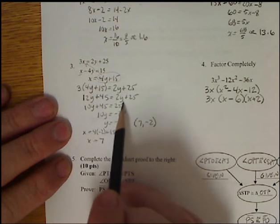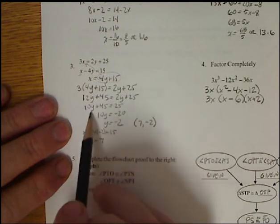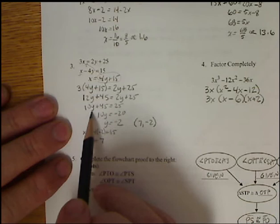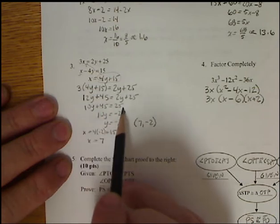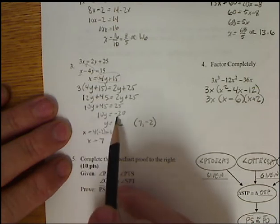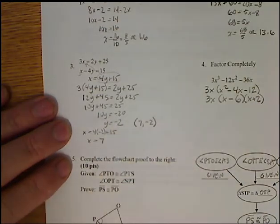Again, move my y's to one side, so I subtracted 2y. I get 10y plus 45 equals 25. I subtract 45 from both sides. I get 10y equals negative 20. Solve for y, I get y equals negative 2.